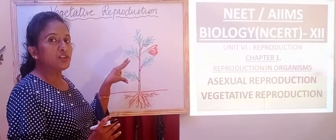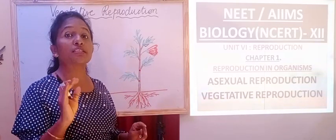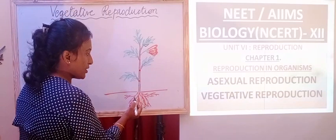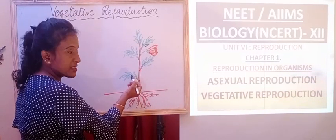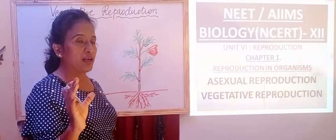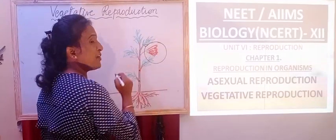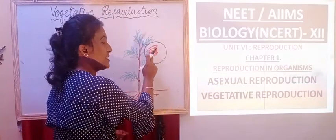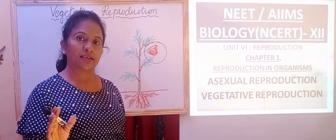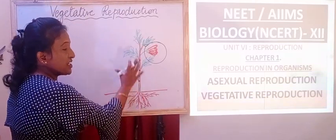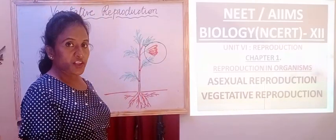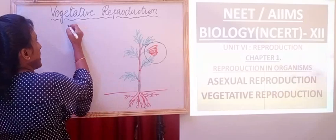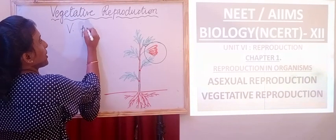Any part of the plant which doesn't undergo sexual reproduction is called as vegetative plant. For example, roots, stem, leaves are the vegetative part of the plant. Whereas flowers are the sexual reproductive part since it contains stamens and carpels. The vegetative part which undergoes reproduction is called as vegetative reproduction. We also call this reproduction as vegetative propagation.